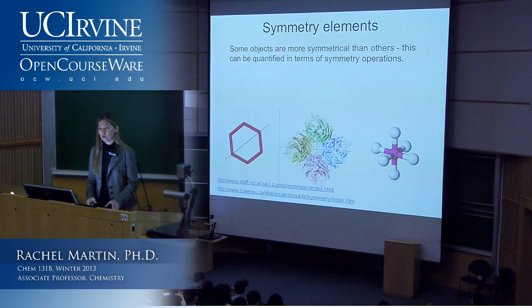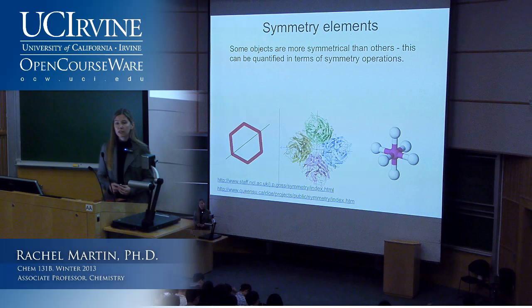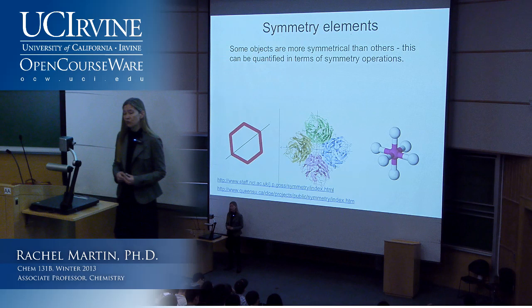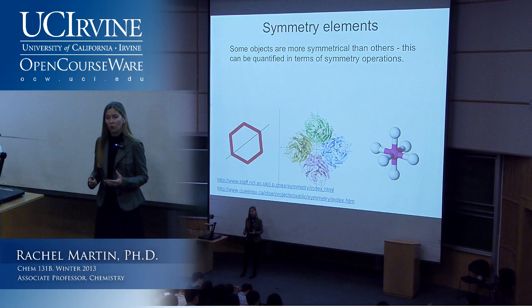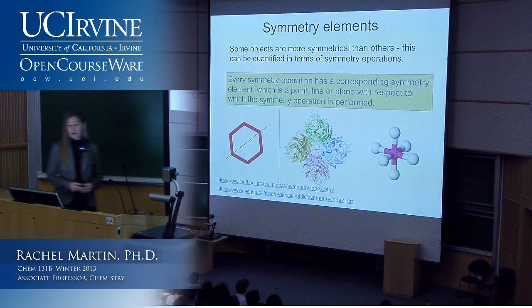What we're really interested in is quantifying symmetry in terms of symmetry operators, and then assigning each molecule to a point group. The point group is a descriptor of symmetry that contains a lot of mathematical information. In general chemistry we talked about molecular shapes—trigonal bipyramidal, T-shaped, seesaw—but we're going to talk about these things in a more mathematical way by assigning molecules to a point group, which is more general and gives us a lot of information.